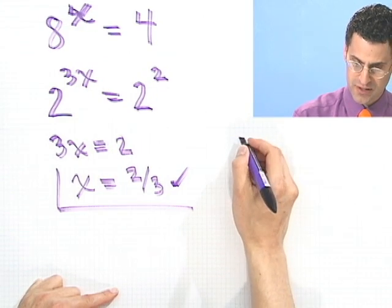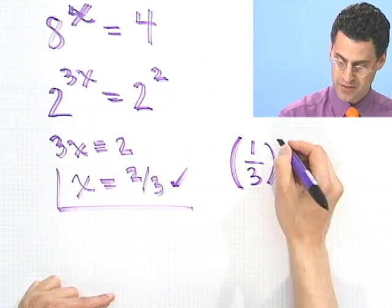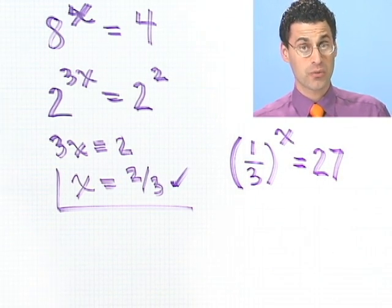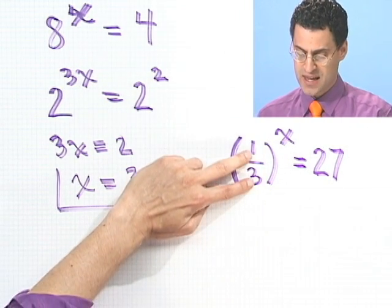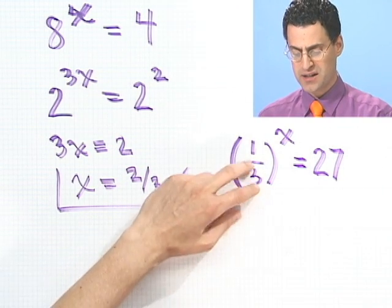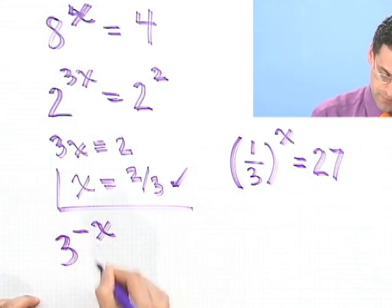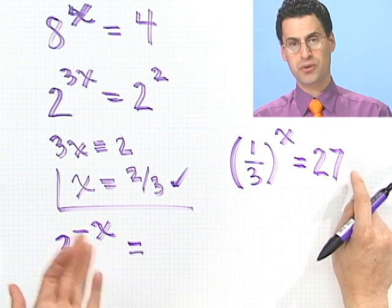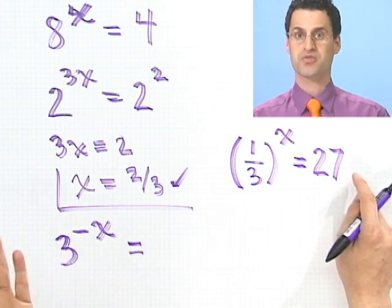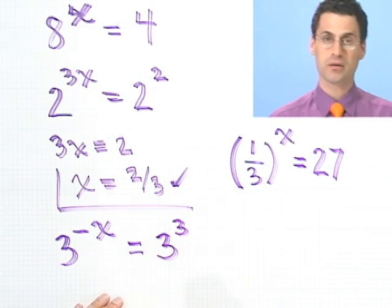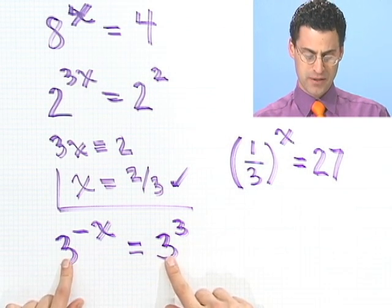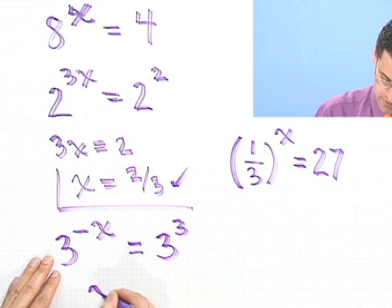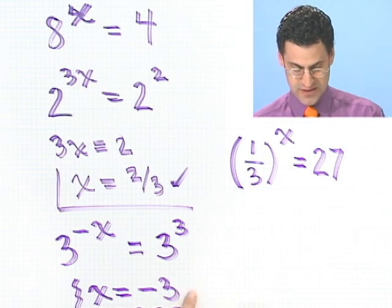A couple more. How about this one? I'm going to try to scramble things up a little bit here. 1 third to the x equals 27. Now this seems a little bit stranger. So how would we do this? Well, let's think about this. First of all, how could I write 1 third to the x? I could write this as 3 to the minus 1 power. And 3 to the minus 1 power all raised to the x power would be 3 to the minus x power. So this whole thing is just 3 to the minus x power. And that equals 27. Now 27, is that 3 to something? Well, let's see. It's 3 times 3. That's 9. Times 3 is 27. So this actually would equal 3 cubed. Now the bases are the same. So if the bases are the same, that must mean these things are the same. Which means that minus x would equal 3. Or x would equal negative 3. So x would equal negative 3.